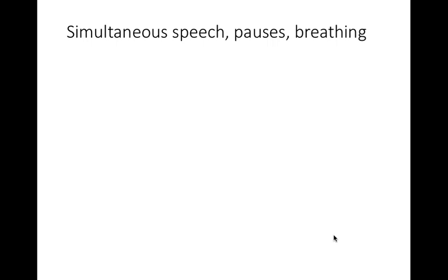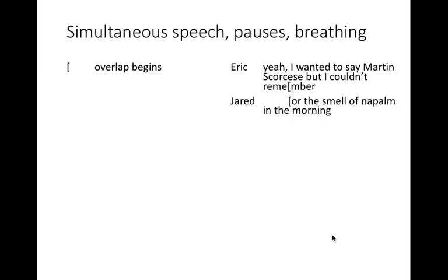This is an overview of symbols that are used to create exact transcriptions of how people are speaking. A square bracket is used to indicate the moment when two people are speaking at once. Here, the moment when Eric says the word 'remember,' while he's still saying the last syllable, Jared is already speaking. Notice that we line up those brackets so that the things being said at the same time are lined up.